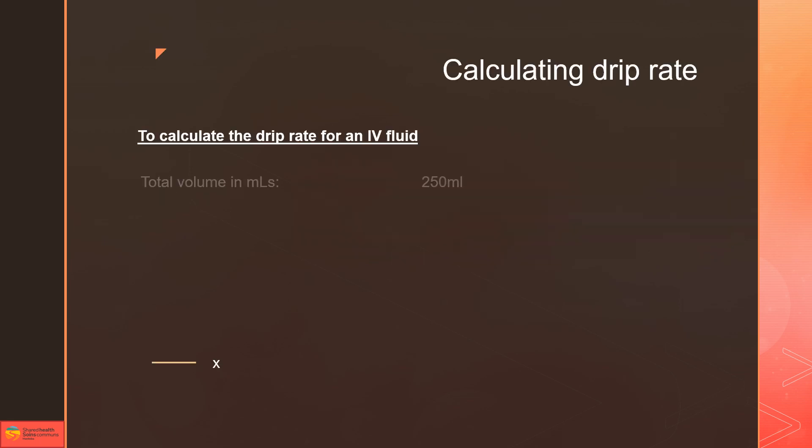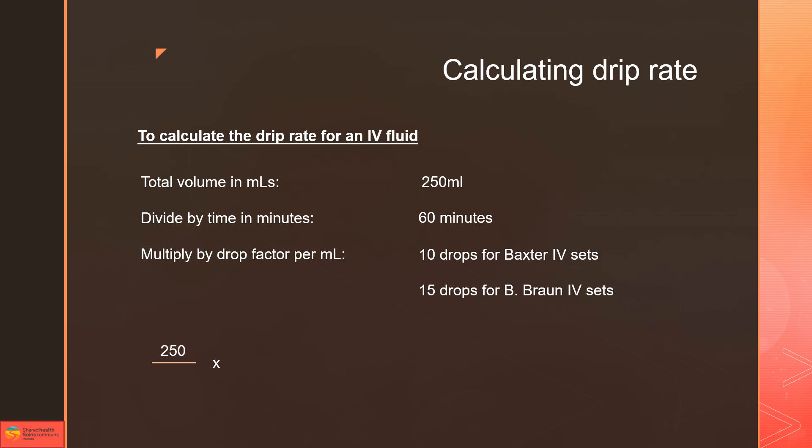When we look at calculating the drip rate, our total volume in mls is 250 because the medication profile says to give 250 mls over 60 minutes—that's going to be our time in minutes. We always do it in minutes, not hours. We're going to give 250 mls over 60 minutes and multiply it by the drop factor per ml—again, 10 drops for Baxter, 15 for the B. Braun IV sets. That'll come to 250 divided by 60 times 10 for the Baxter sets, which gives us 41.6 on your calculator, which rounds off to 42 drops per minute, which reflects exactly what it states in the care map.